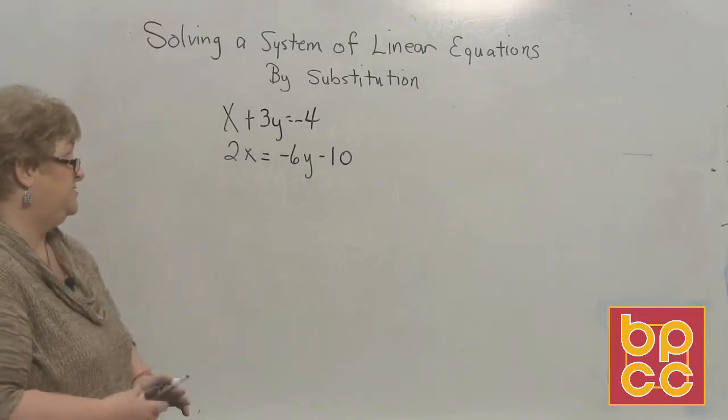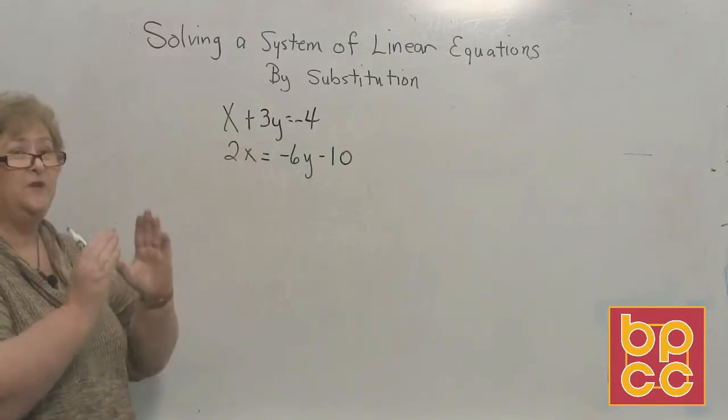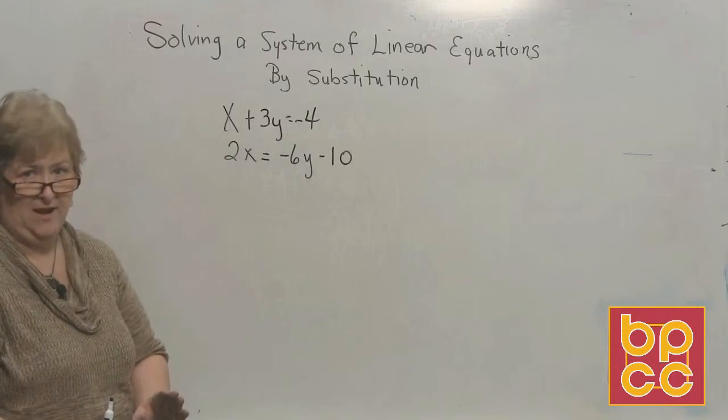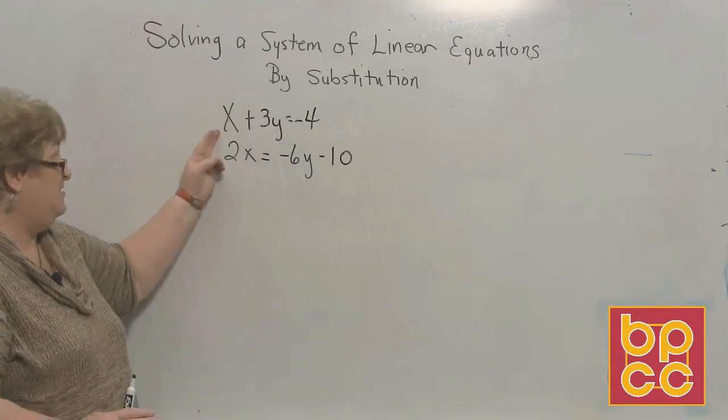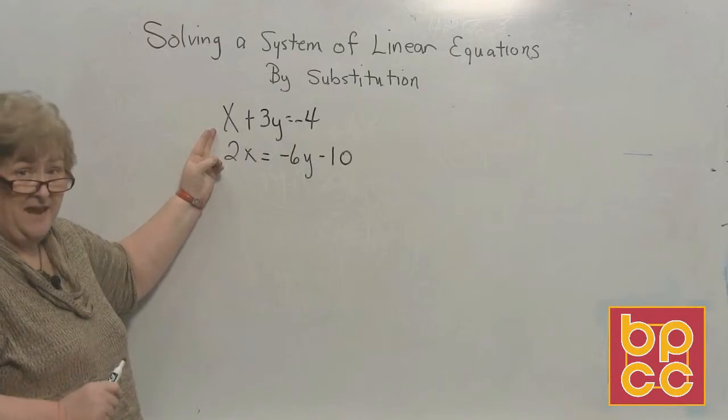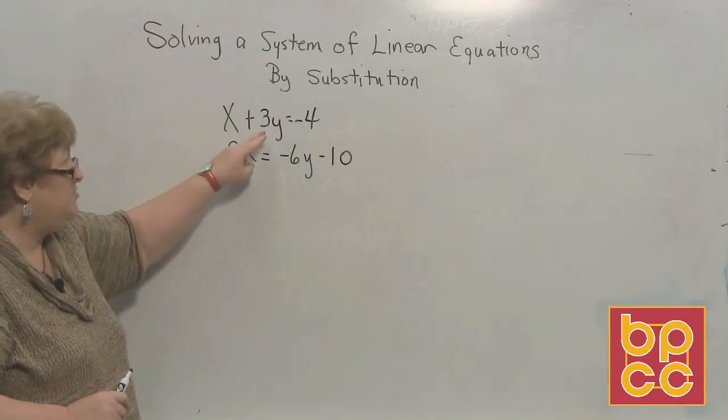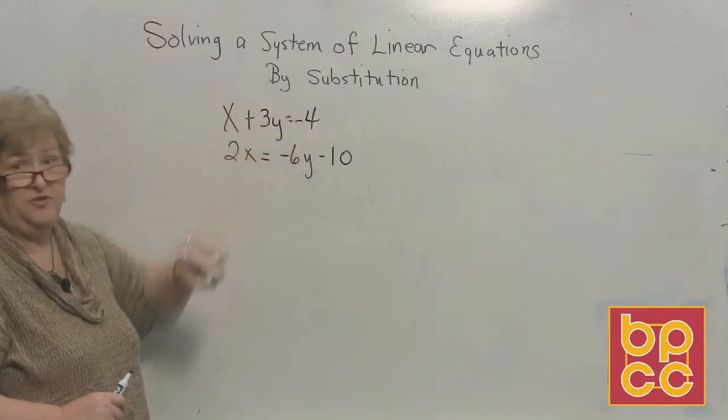Now as I look at this, this is a 3y, you've got a 2x here and a negative 6y. Now I just want a single x or a single y. And I see that I do have a single x, but he is not by himself, but I can make that happen. Why don't we keep this x, but let's tell the 3y to get on over to the other side.